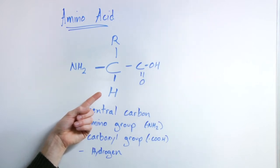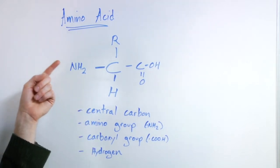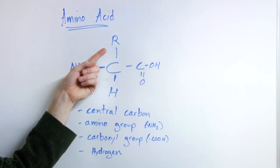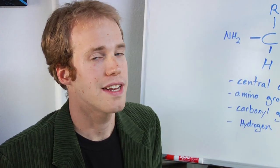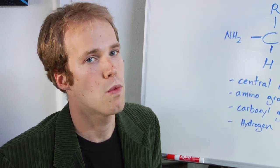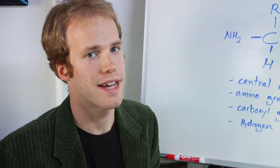and then for the fourth bond coming off of this central carbon, you have an additional group. It's usually signified as R. So depending on what that group actually is, you form one of your 20 different amino acids.